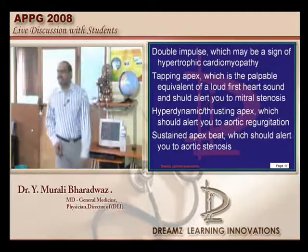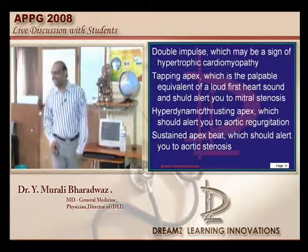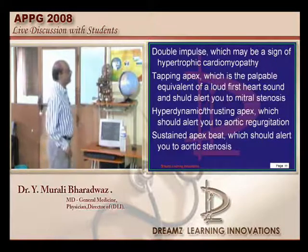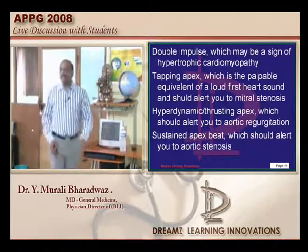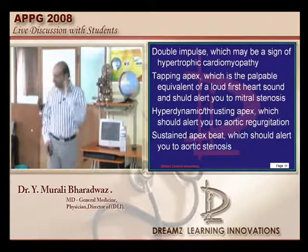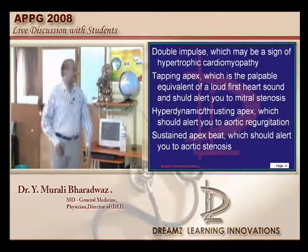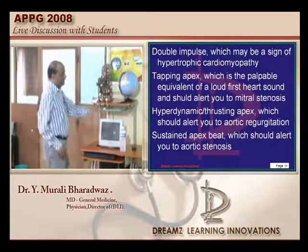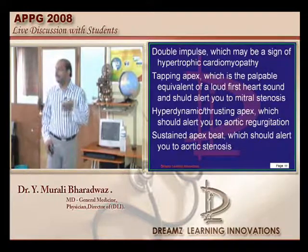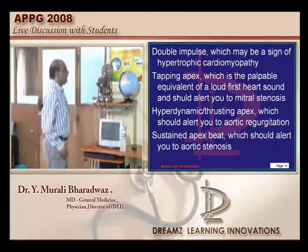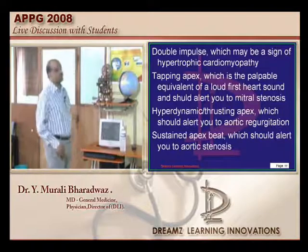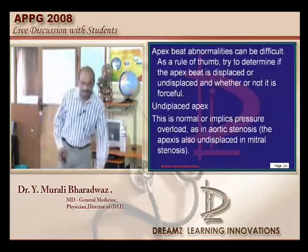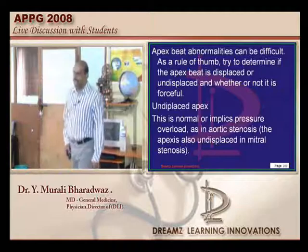Different types of apex beats: double impulse in hypertrophic obstructive cardiomyopathy; tapping apex in mitral stenosis corresponding to the loud first heart sound; hyperdynamic thrusting apex in aortic regurgitation, pregnancy, and beriberi; and a sustained apex beat in aortic stenosis.